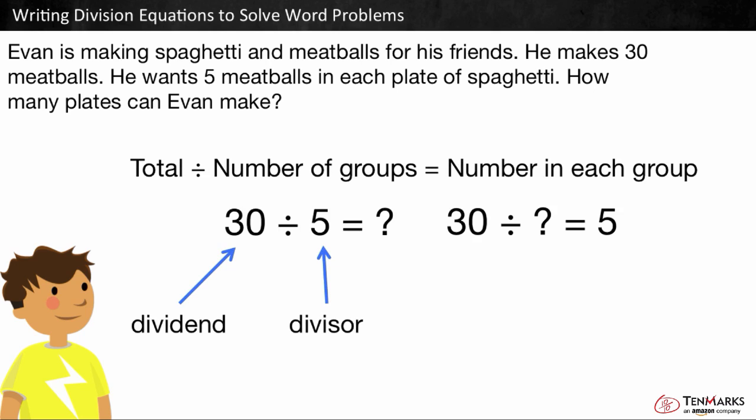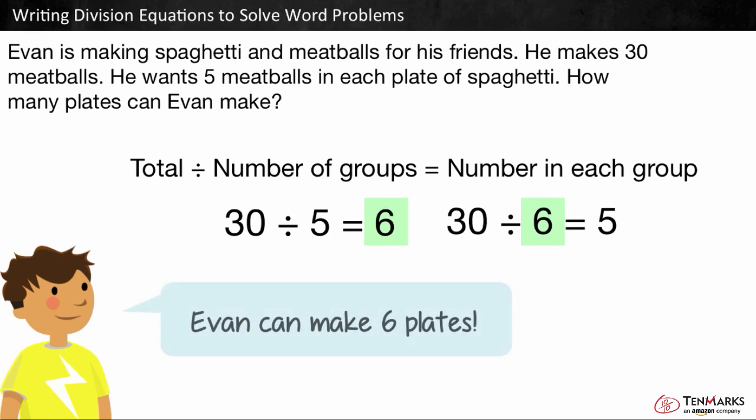And the answer you get when you divide the two numbers is called the quotient. We know that 6 groups of 5 make 30, so Evan can make 6 plates of spaghetti with 5 meatballs in each.